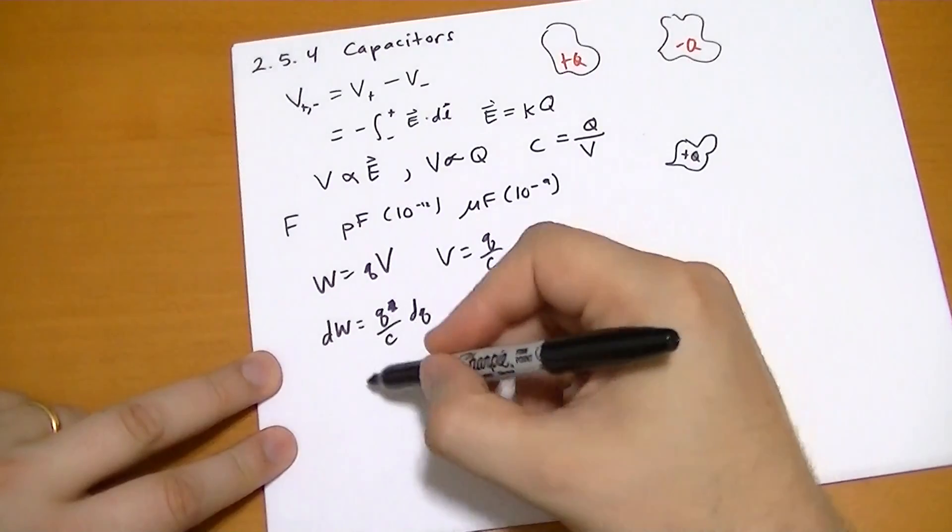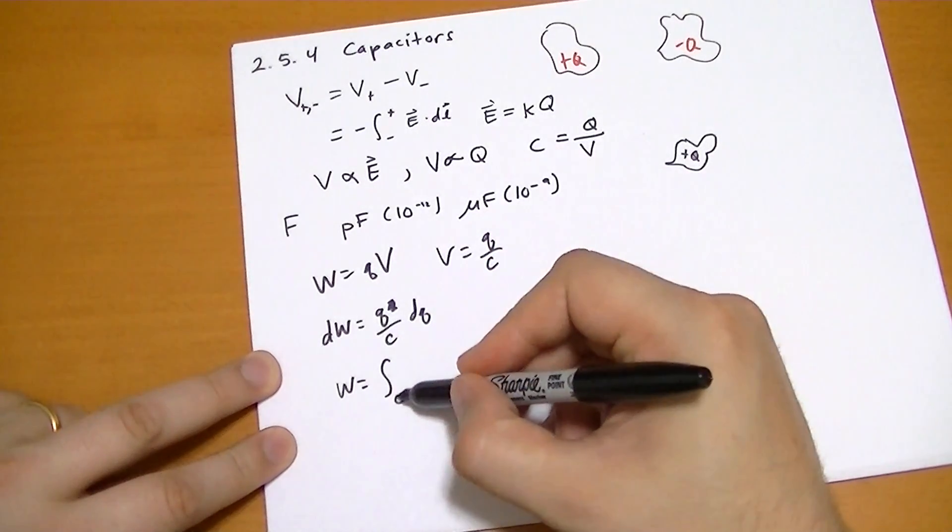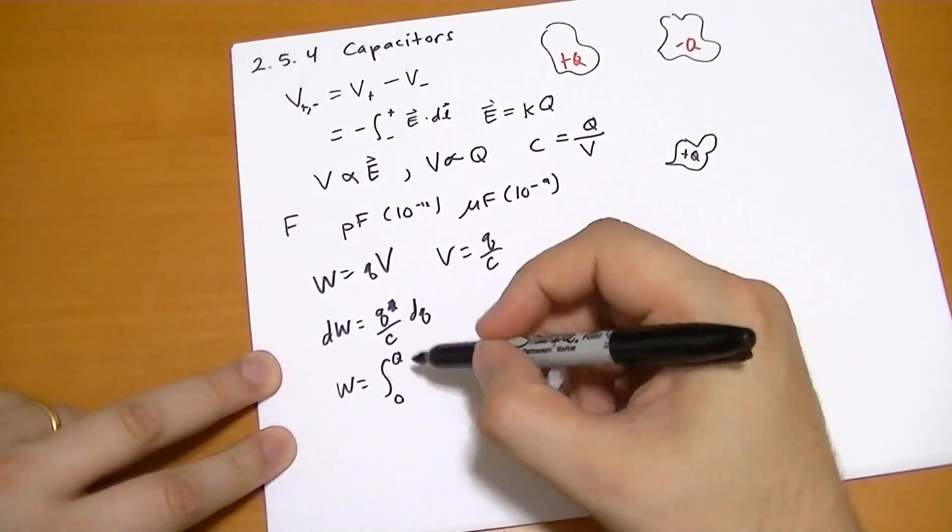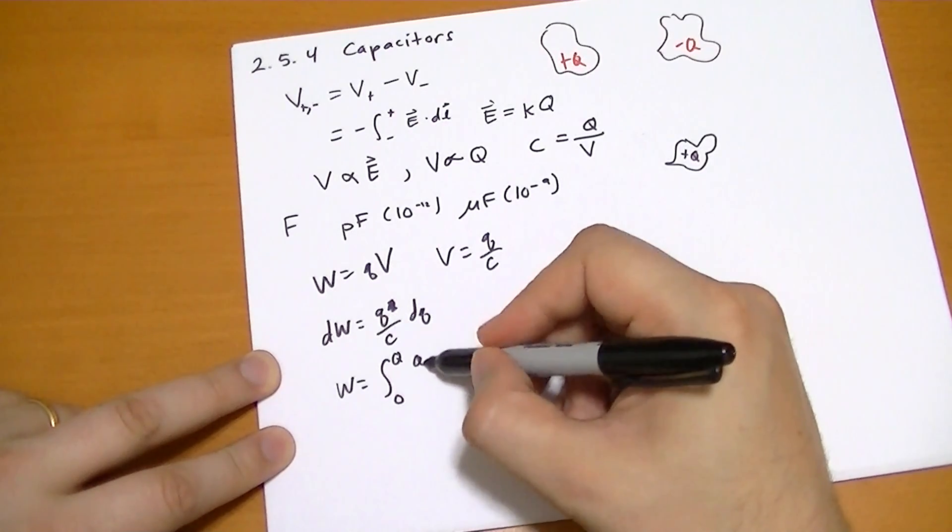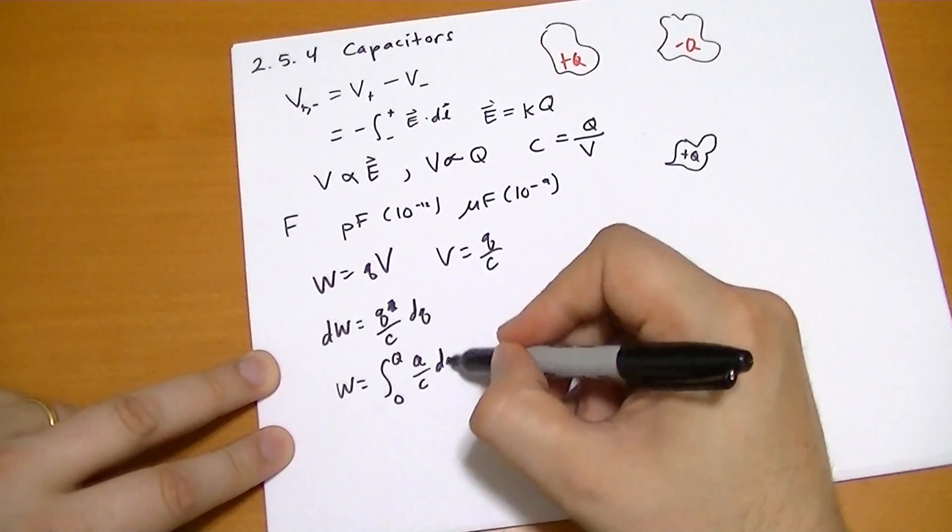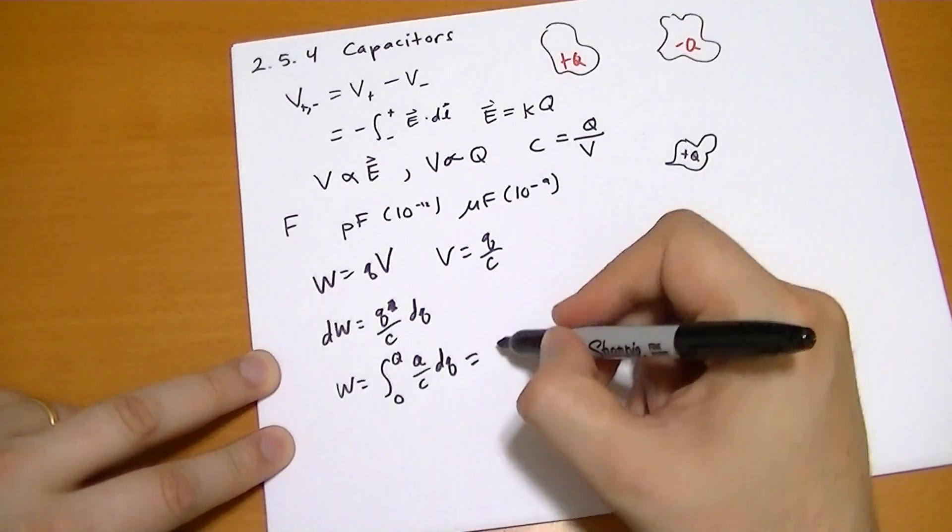And then if you integrate over that, you get the work is equal to the integral starting from zero and going all the way up to capital Q of q over C dq.